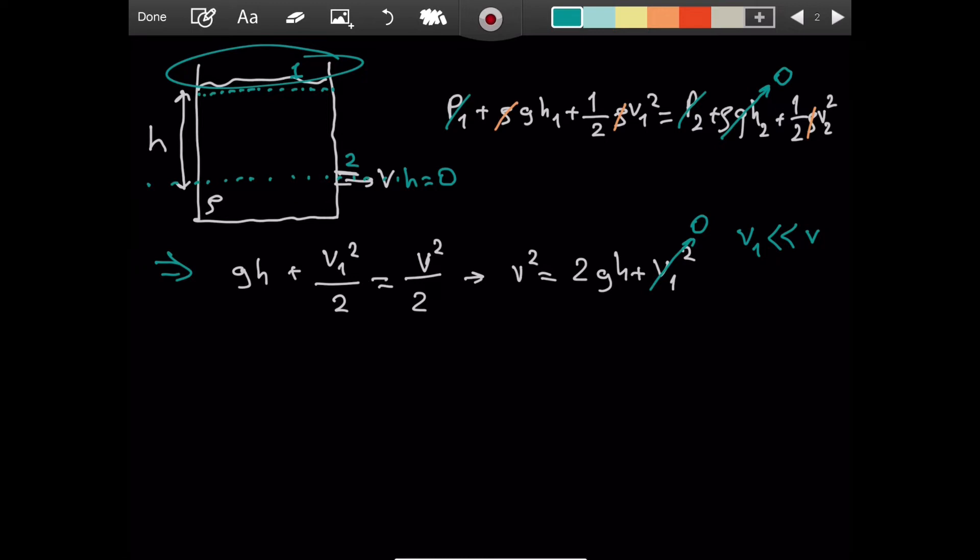So v1 can be neglected here. We can take it to be 0 in comparison to v squared. Which means that v is approximately equal to the square root of 2 g h. This is what we need. This is the general case. Using this result, we now return to our question. And we keep in mind that h is the distance from the top to the point of interest. It is the depth, it is not the height. Because depth is from the top to the bottom and height is from the bottom to the top. There is a huge difference between the two.